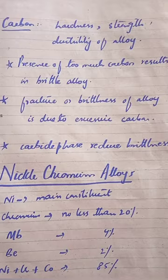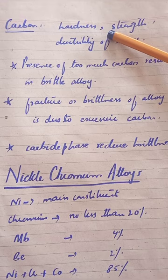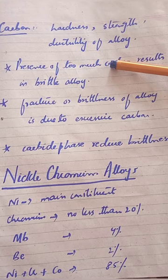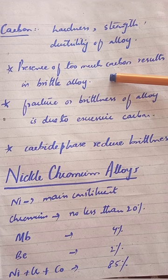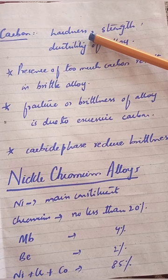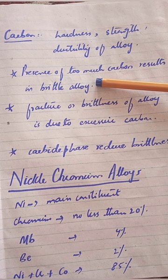Carbon has four functions: it improves hardness, strength, and ductility of alloys. However, two important points: if there is too much carbon, it results in a brittle alloy. A lot of carbon makes the alloy very hard and therefore very brittle, and fracture can occur.